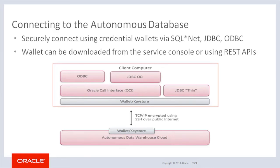Connections are done using credential wallets via SQL Net, JDBC, or ODBC. The wallet can be downloaded from the console or using REST APIs. We will cover this procedure in more detail in future modules. Without the wallet and credentials, there is no easy way to access the Autonomous Database, thus providing a secure, customer-managed process for allowing users to connect.